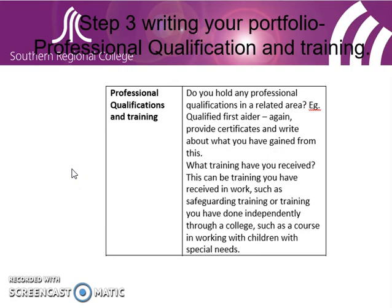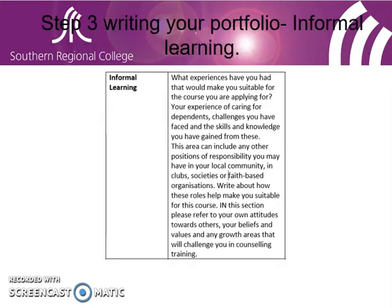Professional Qualifications and Training is the next section. This allows you to evidence any further qualifications such as first aid, safeguarding training, or training done independently through colleges or employment — for example, courses working with children with special needs or any relevant short courses you've completed in the past. Each time, refer back to your suitability for the course you're applying for.